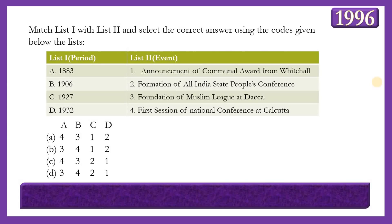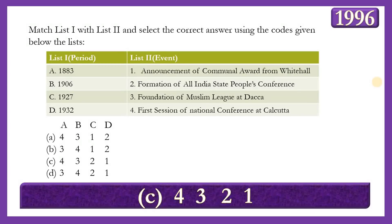Next matching question: Match years with events. List 1: 1883, 1906, 1927, 1932. List 2: Announcement of Communal Award from Whitehall; Formation of All India State People's Conference; Foundation of Muslim League at Dhaka; First session of National Conference at Calcutta. The answer is option C — 4, 3, 2, 1 — meaning first session of National Congress at Calcutta (1883); Foundation of Muslim League in Dhaka (1906); Formation of All India State People's Conference (1927); and Announcement of Communal Award by Ramsay MacDonald from Whitehall (1932).